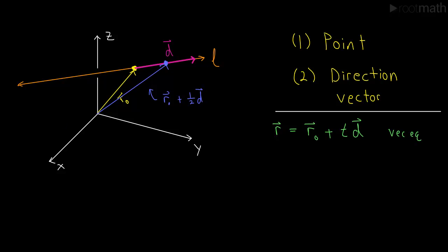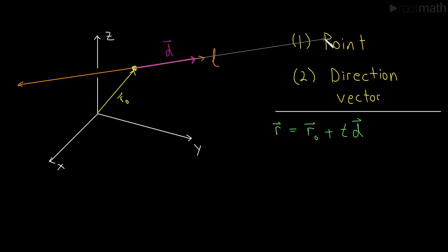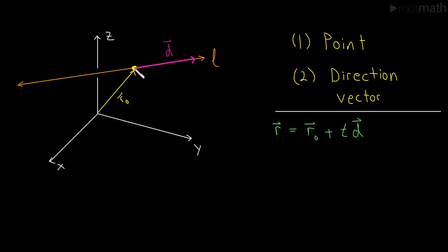We already did two examples — when T is 1 and when T is one-half — and we got two different points on the line. If you let T vary and be any number, all we're doing is scaling D. If T is really big, we first march up R0, land at the point on the line, then march really far along D and get a point way out there. Or if T is negative, that flips the direction of D and we might get a point in the other direction. Conceptually, that's where this vector equation is coming from.